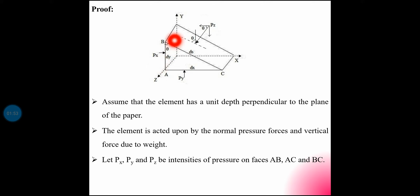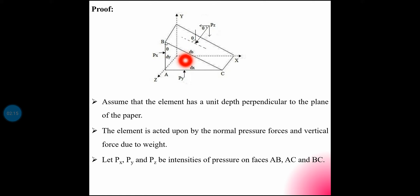Pressure is acting as force per unit area. Let Px, Py and Pz be the intensities of pressure on faces AB, AC and BC respectively. The weight of the fluid element acts through the center of gravity in the vertical downward direction.